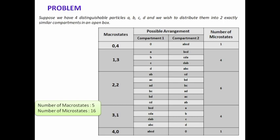Before reaching the equilibrium condition, the probability of all macrostates occurring will be equally probable. But at the equilibrium condition, the macrostate which gives the highest number of microstates — that is the (2, 2) macrostate with 6 microstates — will have the maximum probability of occurring. So the (2, 2) macrostate gives the maximum number of microstates and therefore the maximum probability.